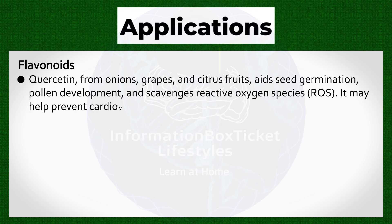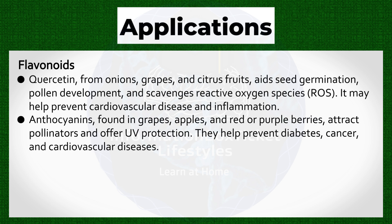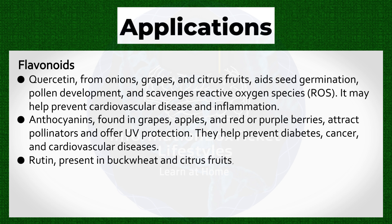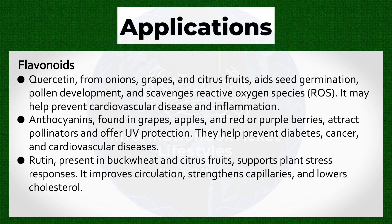Flavonoids applications: Quercetin, from onions, grapes, and citrus fruits, aids seed germination, pollen development, and scavenges reactive oxygen species (ROS). It may help prevent cardiovascular disease and inflammation. Anthocyanins, found in grapes, apples, and red or purple berries, attract pollinators and offer UV protection. They help prevent diabetes, cancer, and cardiovascular diseases. Rutin, present in buckwheat and citrus fruits, supports plant stress responses, improves circulation, strengthens capillaries, and lowers cholesterol.